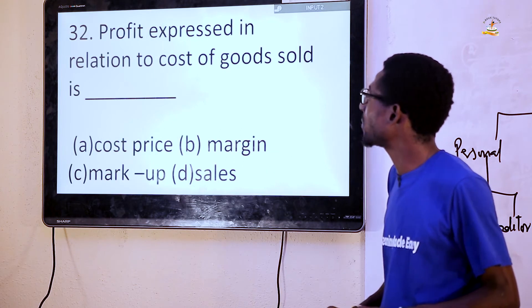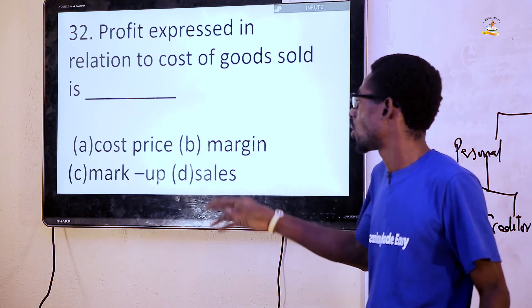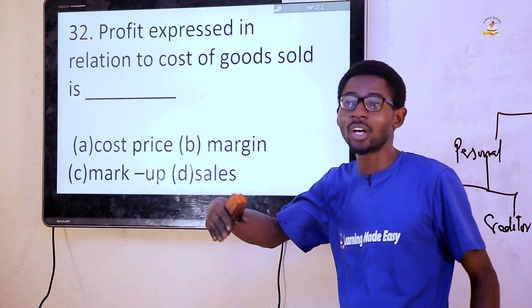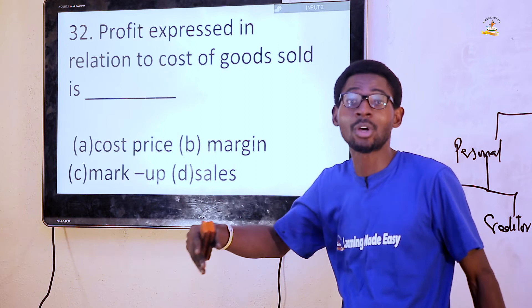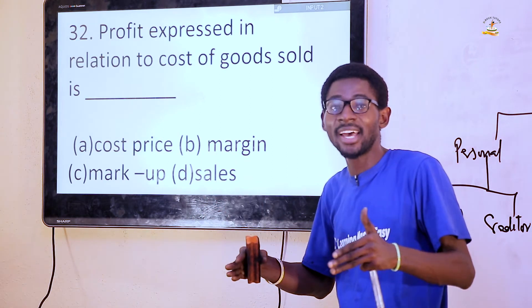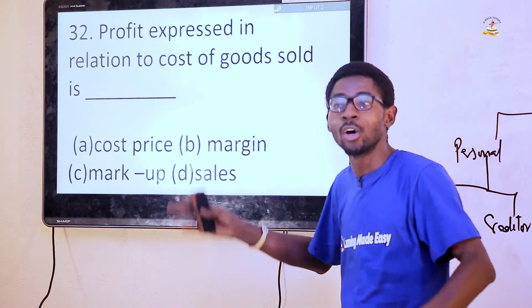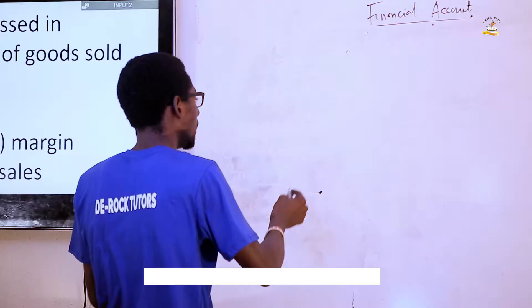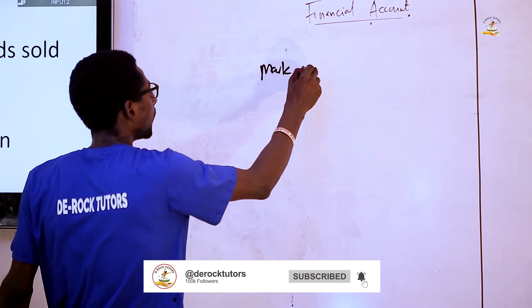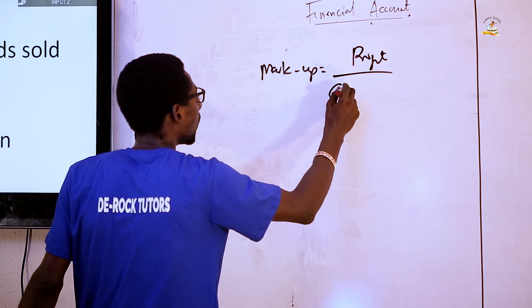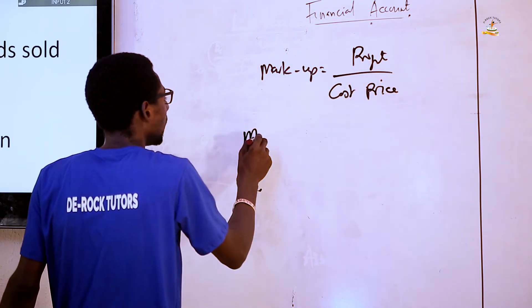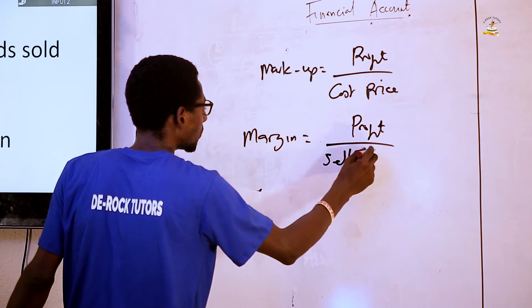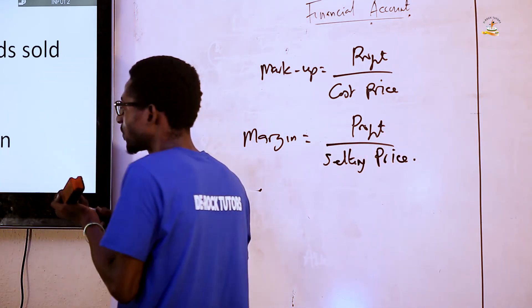Question 32: Profit expressed in relation to cost of goods sold is — cost price, margin, markup, or sales. The answer is C, markup. Cost price is the same as cost of goods sold. Margin is the percentage of profit expressed on sales — formula: profit over selling price. Markup is on cost of goods sold — formula: profit over cost price. So the answer is C, markup.